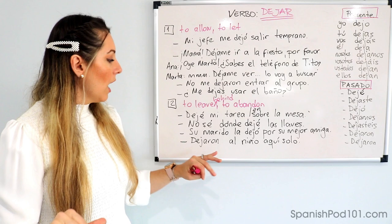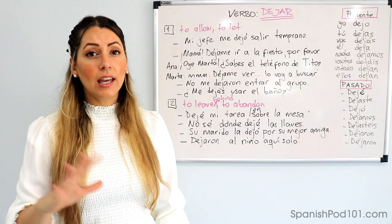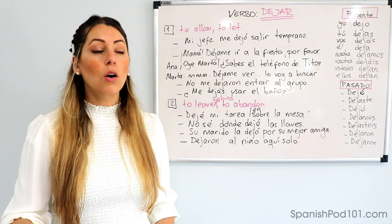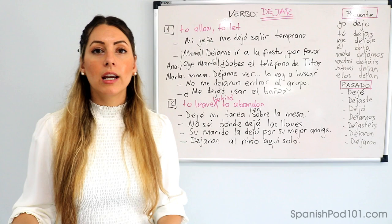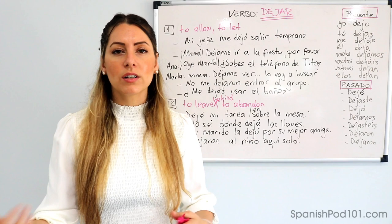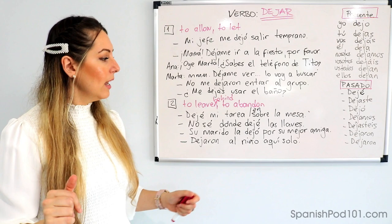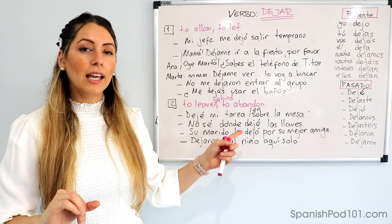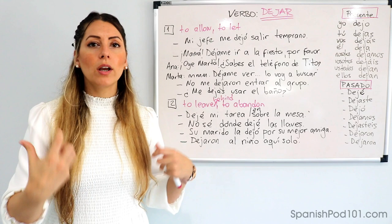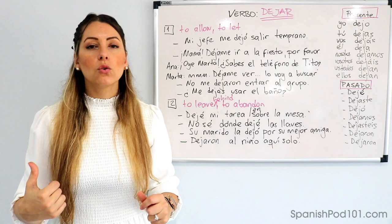Dejaron al niño aquí solo — they left the kid here by himself. O ya dejé los niños en la escuela — I left the kids already at school. It's not always that leaving someone means you abandon them — you can also be just dropping them off. ¿Puedes ver la diferencia entre el significado número uno y el número dos? I hope you can see the difference in meanings — 'to allow or to let' versus 'to abandon or to leave behind'.